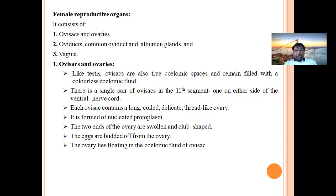The female reproductive organs consist of three different parts: first, the ovisac and ories; second, the oviducts, common oviduct, and albumin glands; and third, the vagina.